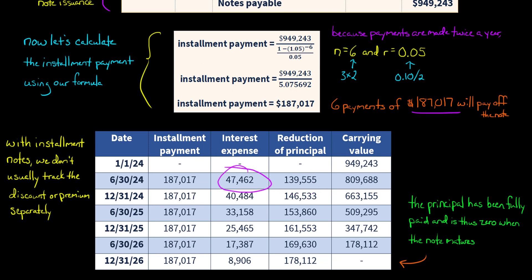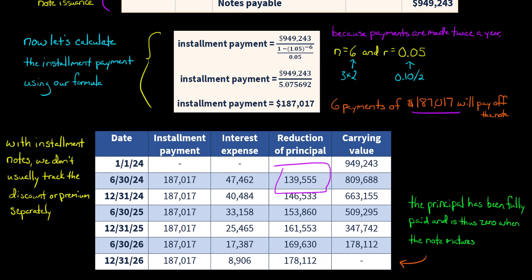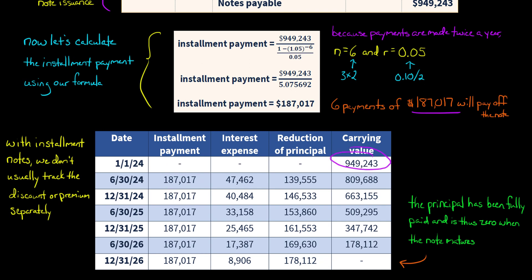To calculate the interest expense — $47,462 for our first payment date, June 30th — we take the carrying value and multiply it by the market rate divided by two, which is 5%: $949,243 × 5% = $47,462. The reduction in principal is the total payment of $187,017 minus the interest expense. Then we subtract the reduction in principal from the carrying value to get the new carrying value, multiply that new carrying value by the market rate divided by two to get the next period's interest expense. We keep reducing the principal this way until the note has matured and is fully paid off.